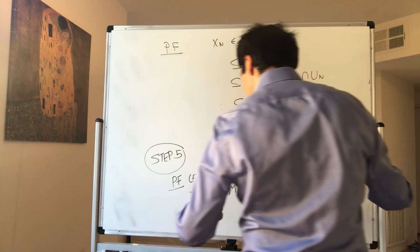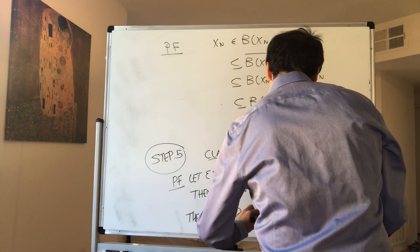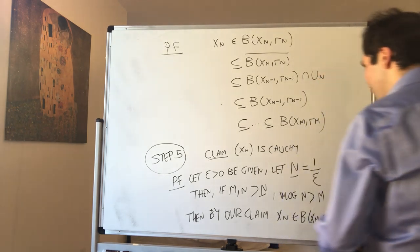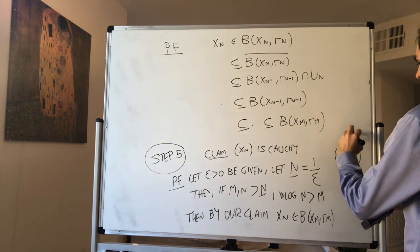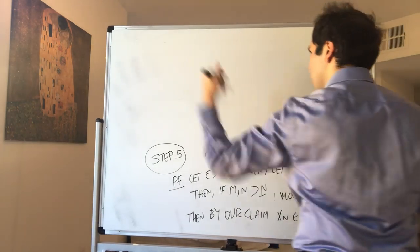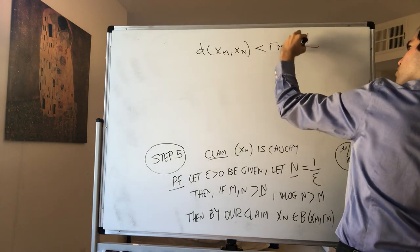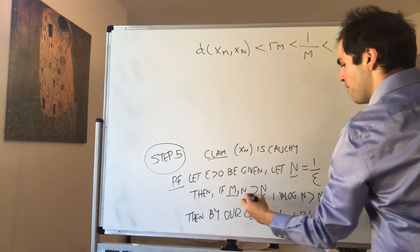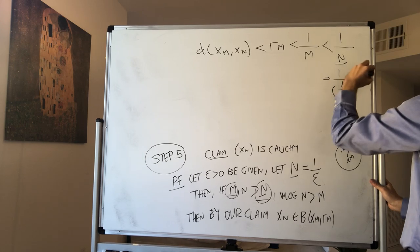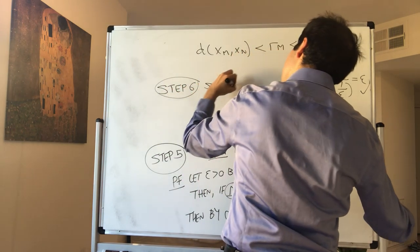But then what do we get? Well, then we have that the distance. So by our claim, we know that the future xn is included in the past ball. And therefore, by definition of a ball, the distance between xm and xn was less than rm. But then rm by construction was less than 1 over m. And then m is bigger than capital N, so 1 over m is less than 1 over capital N. But that's 1 over 1 over epsilon, and that's epsilon. And therefore xn is Cauchy, and because our space is complete, so since S is complete, xn converges to some y in S.